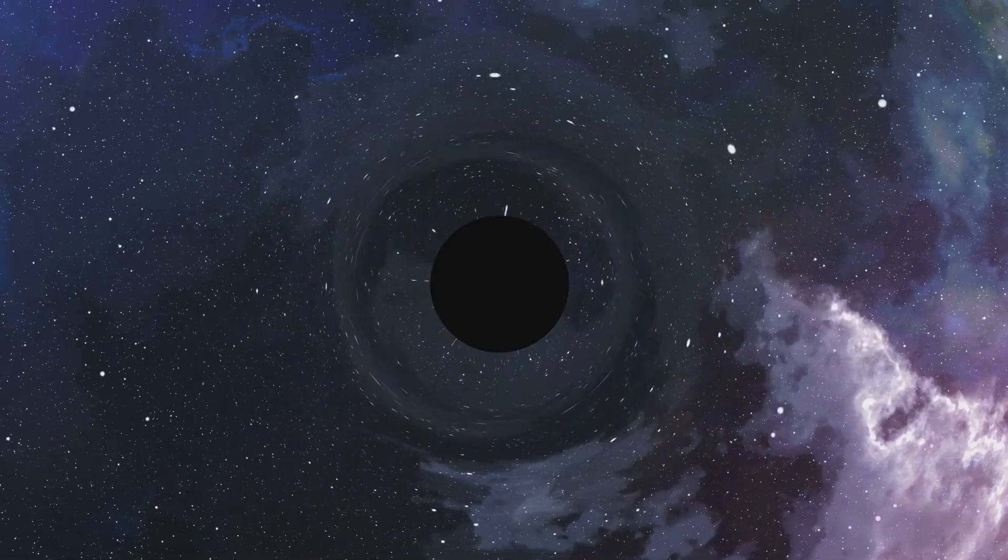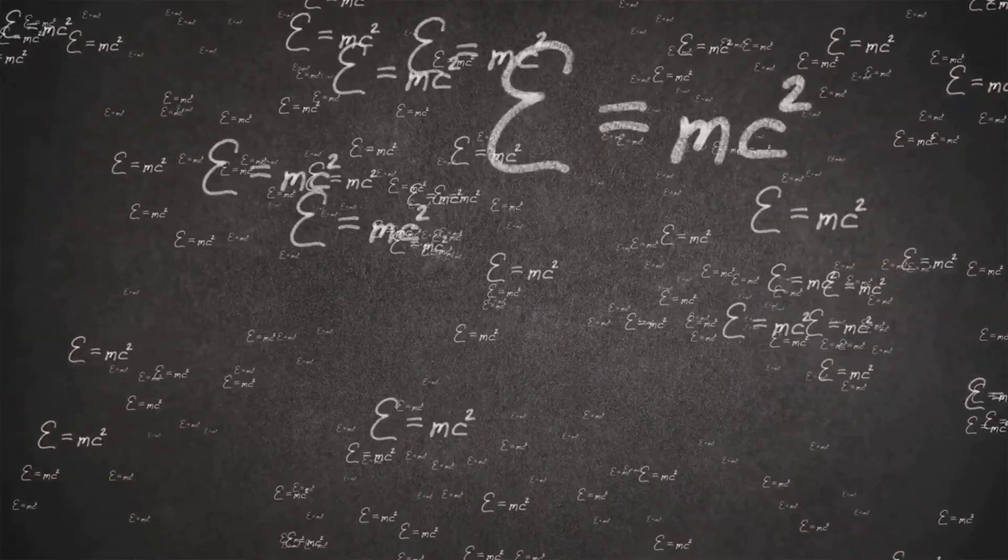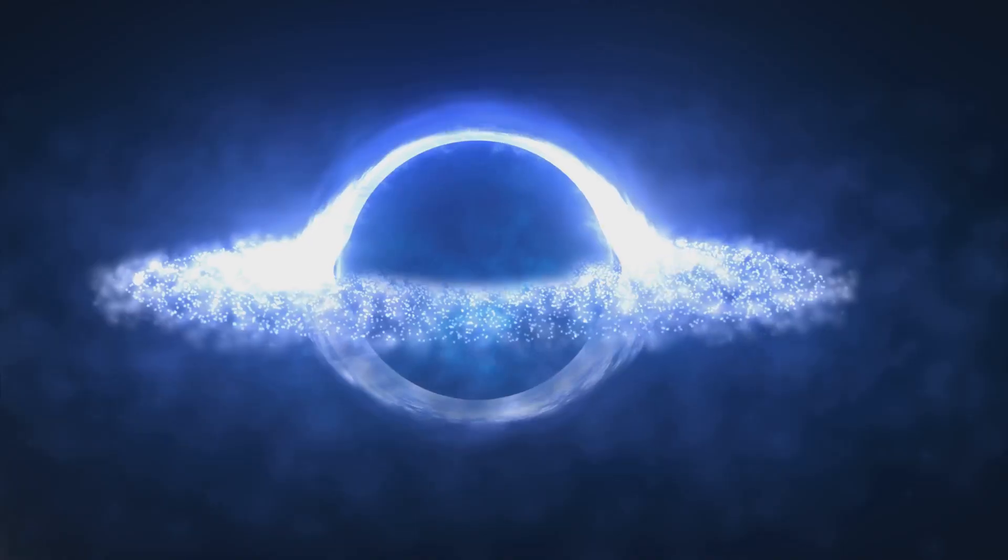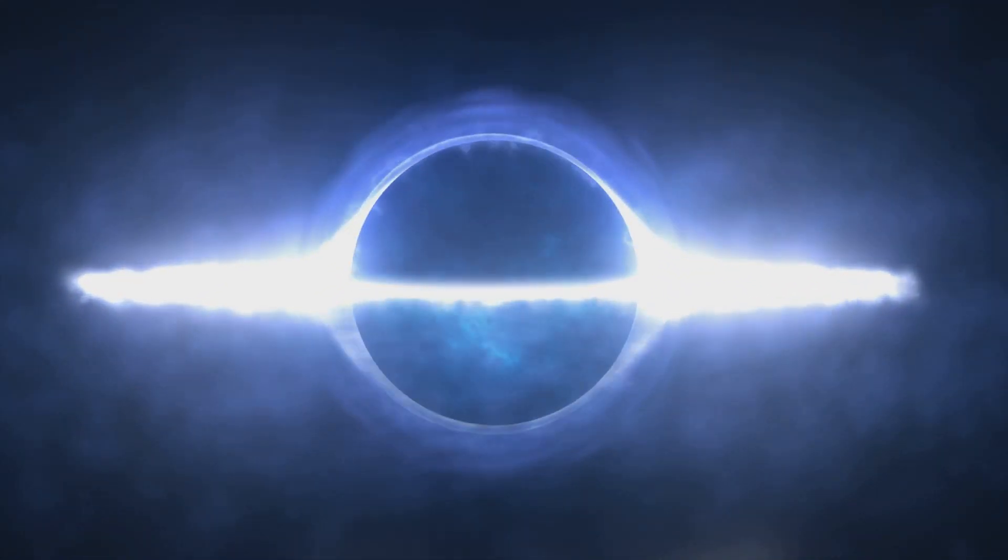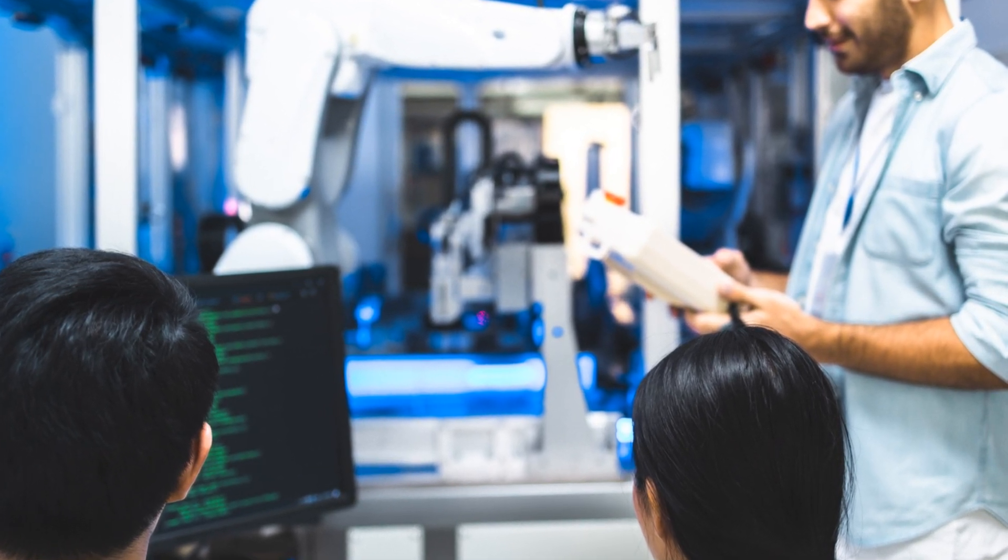But what about white holes? These theoretical entities are often described as the reverse of black holes. While a black hole acts as a cosmic vacuum cleaner, a white hole is thought to be a cosmic geyser, spewing out matter and light. The very existence of white holes remains a topic of debate among physicists.